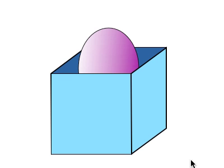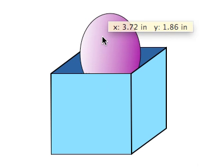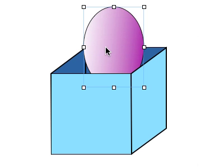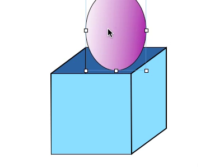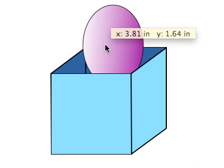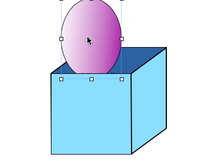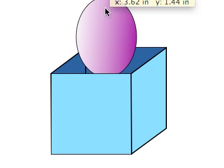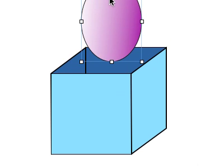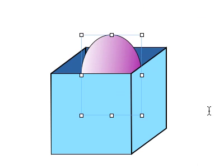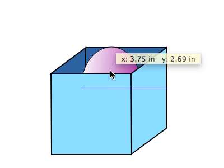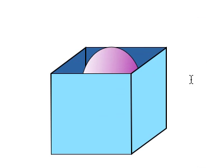Let's take a look at what the finished product will look like. As you can see here I have a box and it looks like there's an egg inside the box — a shape that looks like an egg. I'm going to show you how I can drag the egg in and out of the box — it fits inside the box. I'm going to show you how to make this step by step, so let's get started.